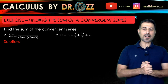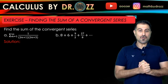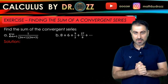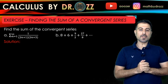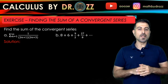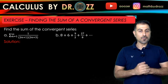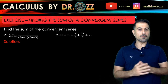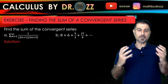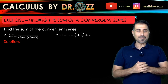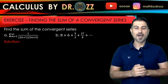Hello, welcome back. This is Calculus by Dr. Oz. Today we're going to go over an exercise where we'll find the sum of a convergent series. The first case is a telescoping series, and the second is a geometric series where we're not given the nth term directly, so we'll first find the nth term in Part B and then apply the formula for the sum of a geometric series.